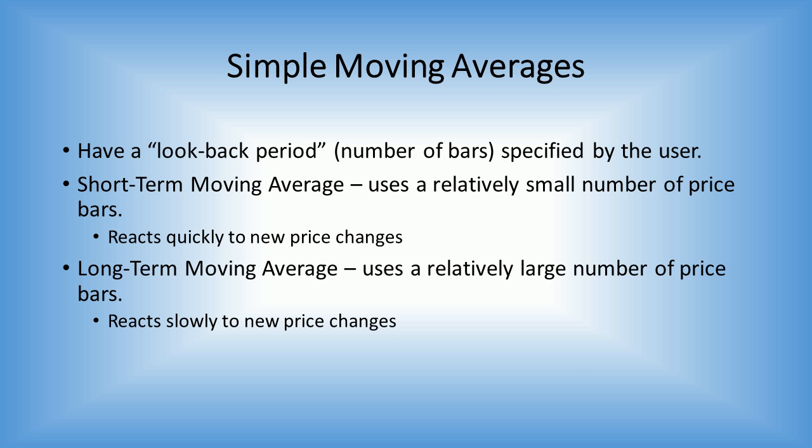Several of these entries use simple moving averages. Simple moving averages have a look-back period, or the number of bars specified by you, the user. Short-term moving averages use a relatively small number of price bars and they react quickly to price changes. Long-term moving averages use a relatively large number of price bars — they're great for identifying longer-term trends, though they do react slowly to changes. Moving averages provide an objective measure of trend direction by smoothing the data, cutting down on the noise of a price chart. Look at the direction of the moving average to get a basic idea of which way the price is moving. A moving average can also act as a support level.